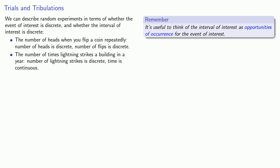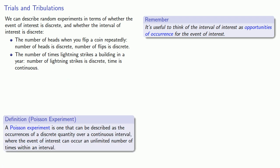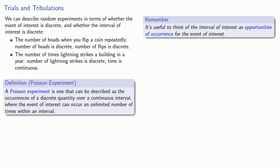This leads us to the idea of a Poisson experiment. A Poisson experiment is one that can be described as the occurrences of a discrete quantity over a continuous interval, where the event of interest can occur an unlimited number of times within an interval.